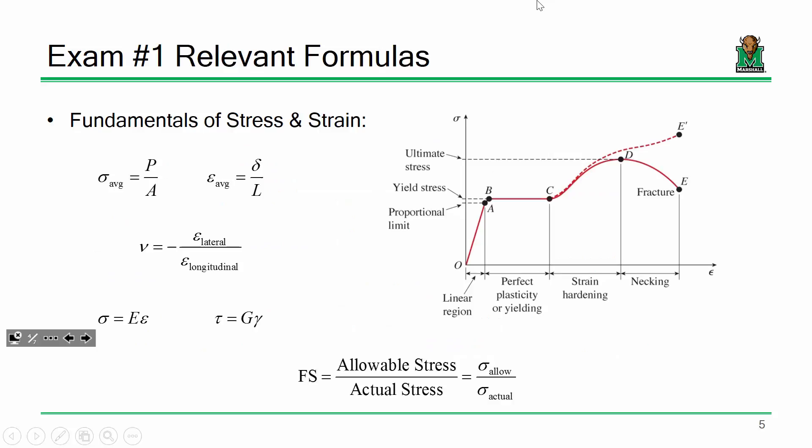I've given you some relevant formulas and equations. First, the stress-strain curve — you have a linear portion until you yield, then for mild steel there's a yield plateau with perfectly plastic behavior, then the strain hardening region, necking, and fracture. Make sure you understand how to compute average stress, average strain, Poisson's ratio, the relationship between stress and strain in the linear range — modulus of elasticity, shear modulus — and the factor of safety.